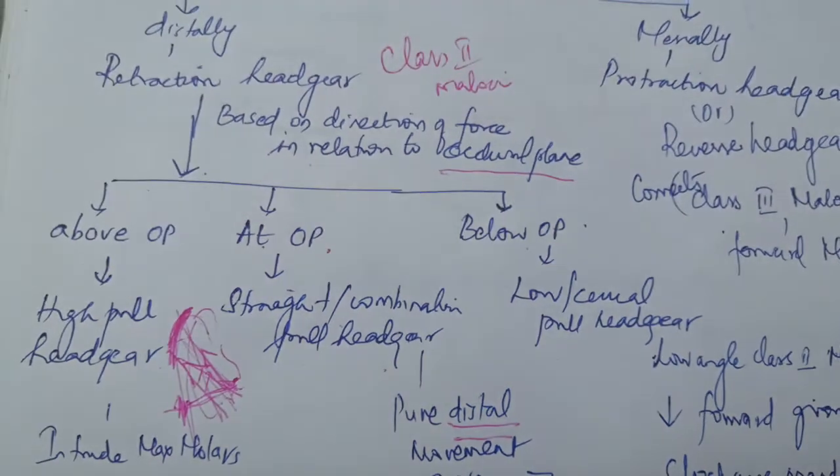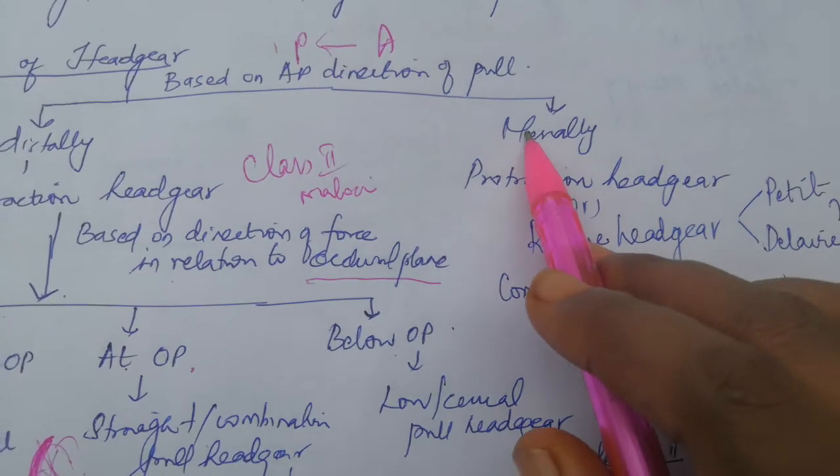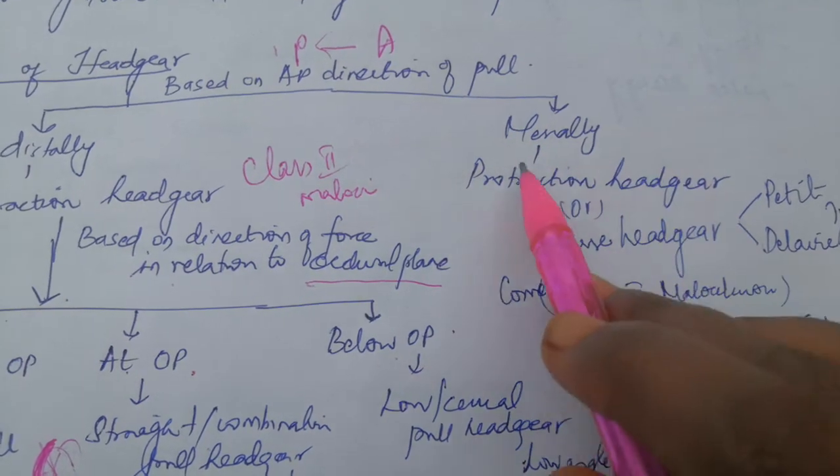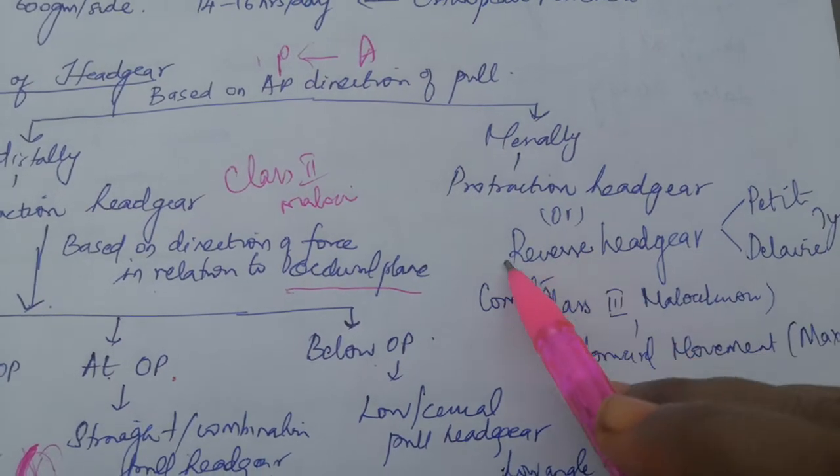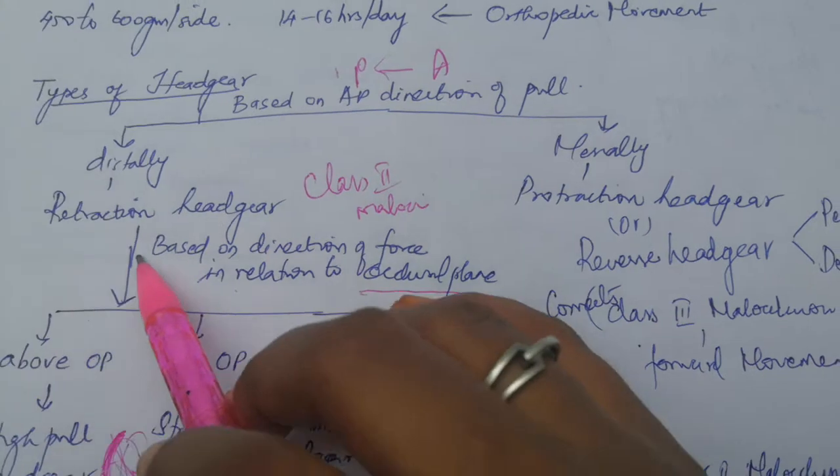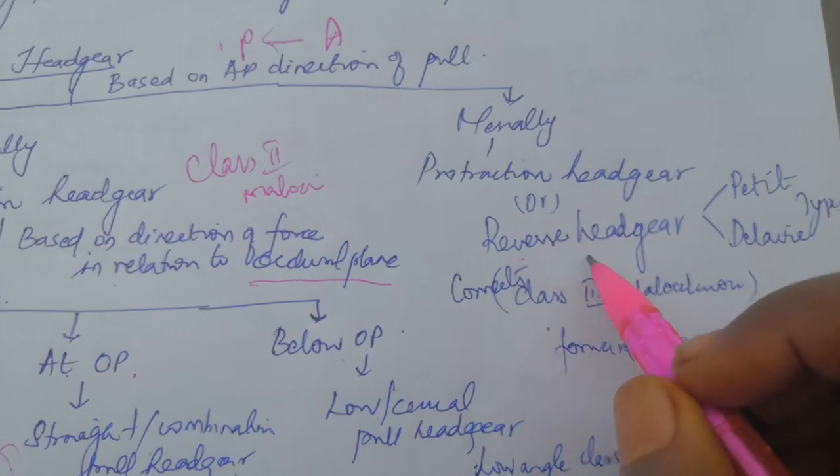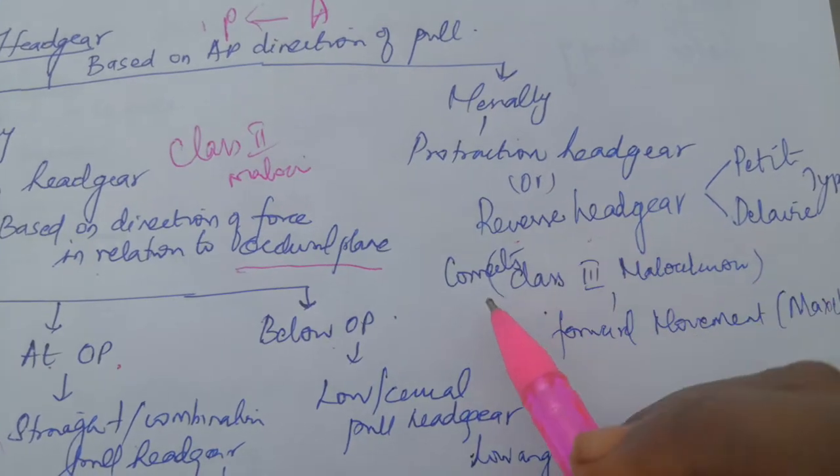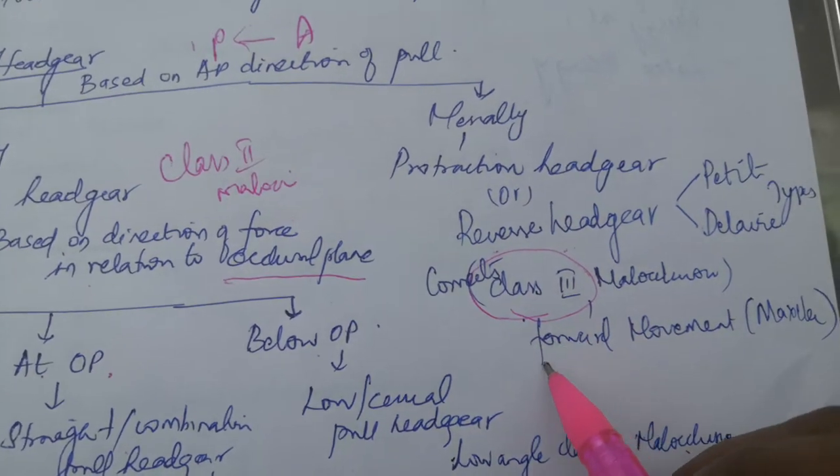Coming to the protraction headgear, this is pulling towards the midline, protraction. Pulling the maxilla forward, it's called reverse headgear. Headgear usually pulls back, but since protraction is happening, we call it reverse headgear. It corrects mainly class 3 malocclusion.